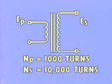Another example: if the turns were 10,000 in the secondary and 1,000 in the primary, then the turns ratio would be 10 to 1. Therefore, the secondary voltage would be 10 times greater than the primary voltage.